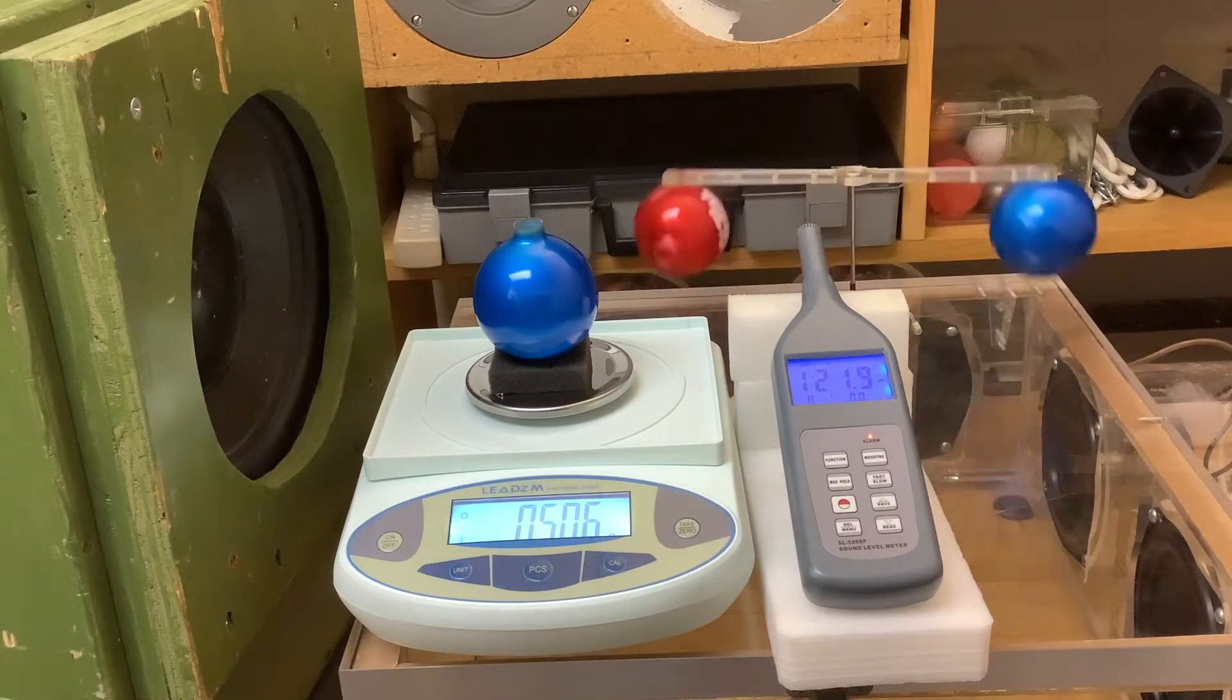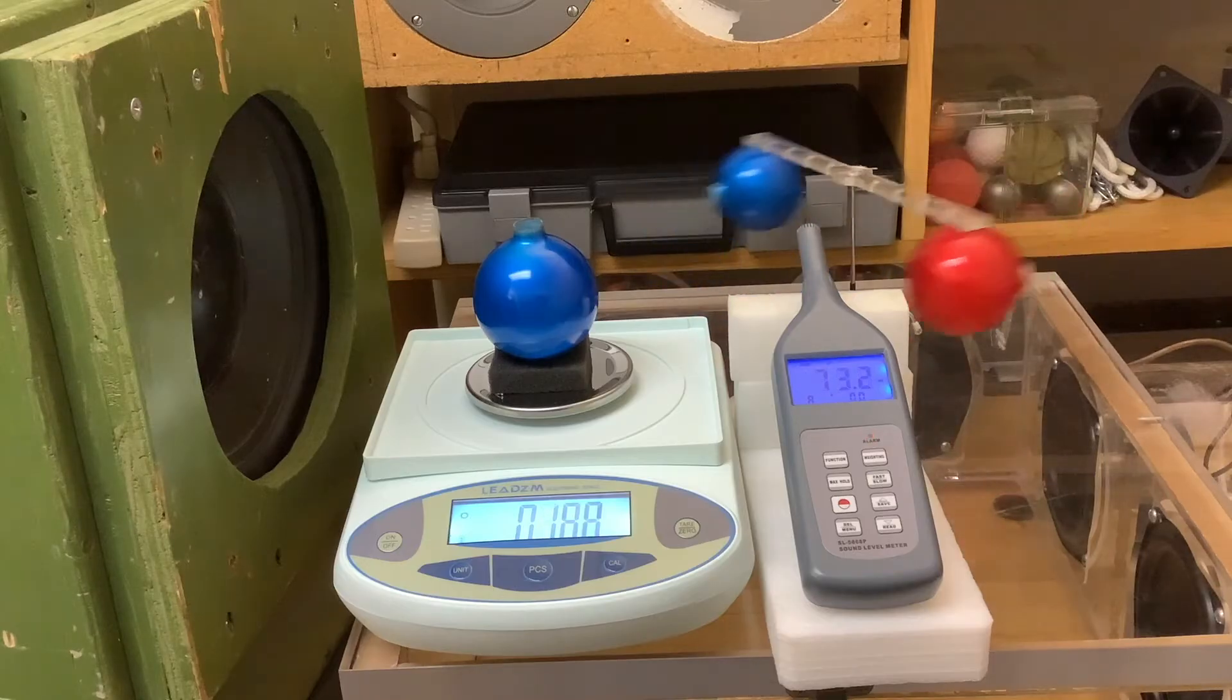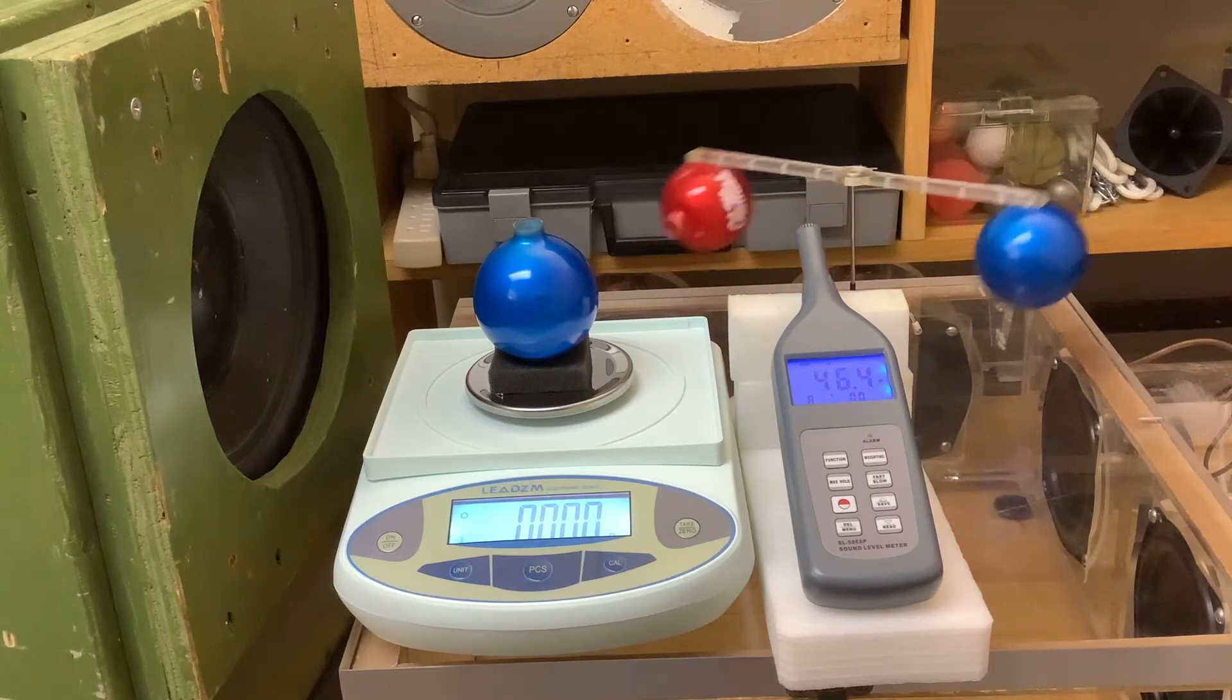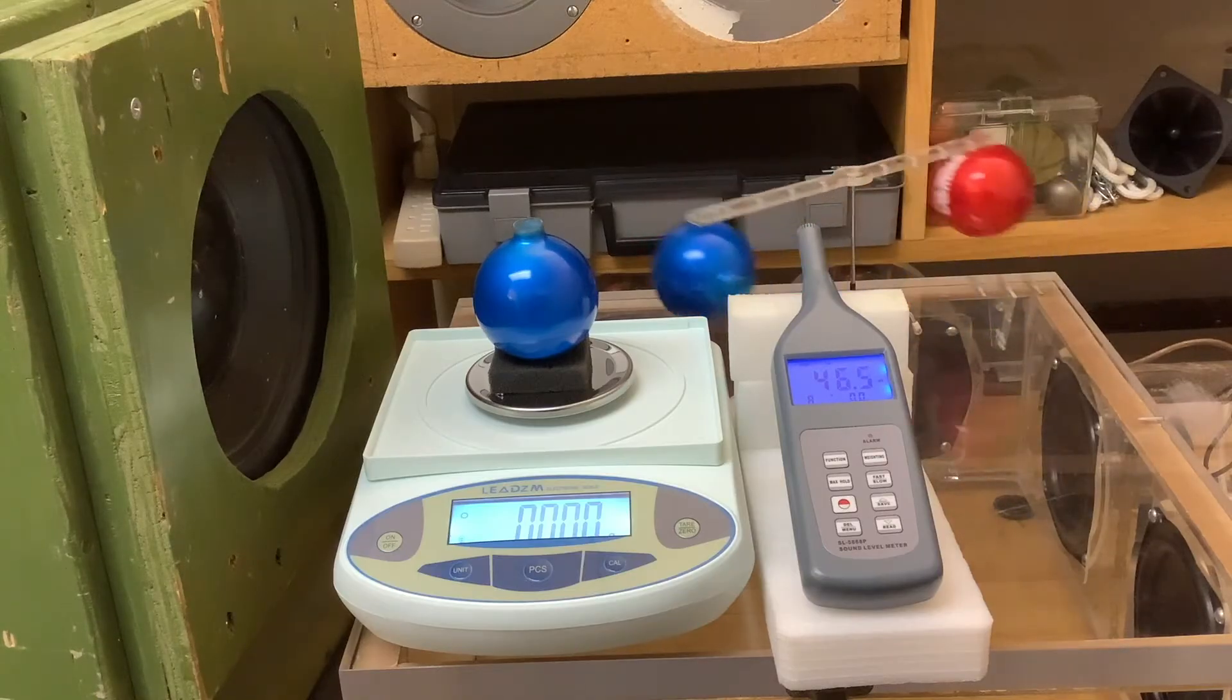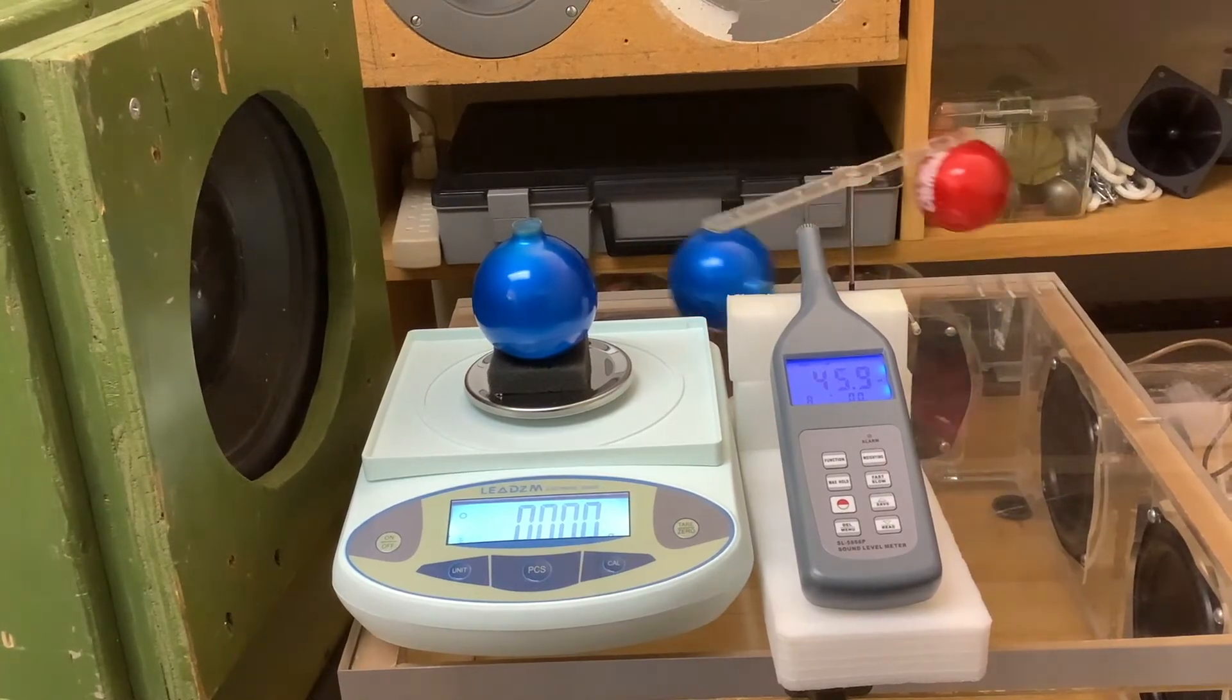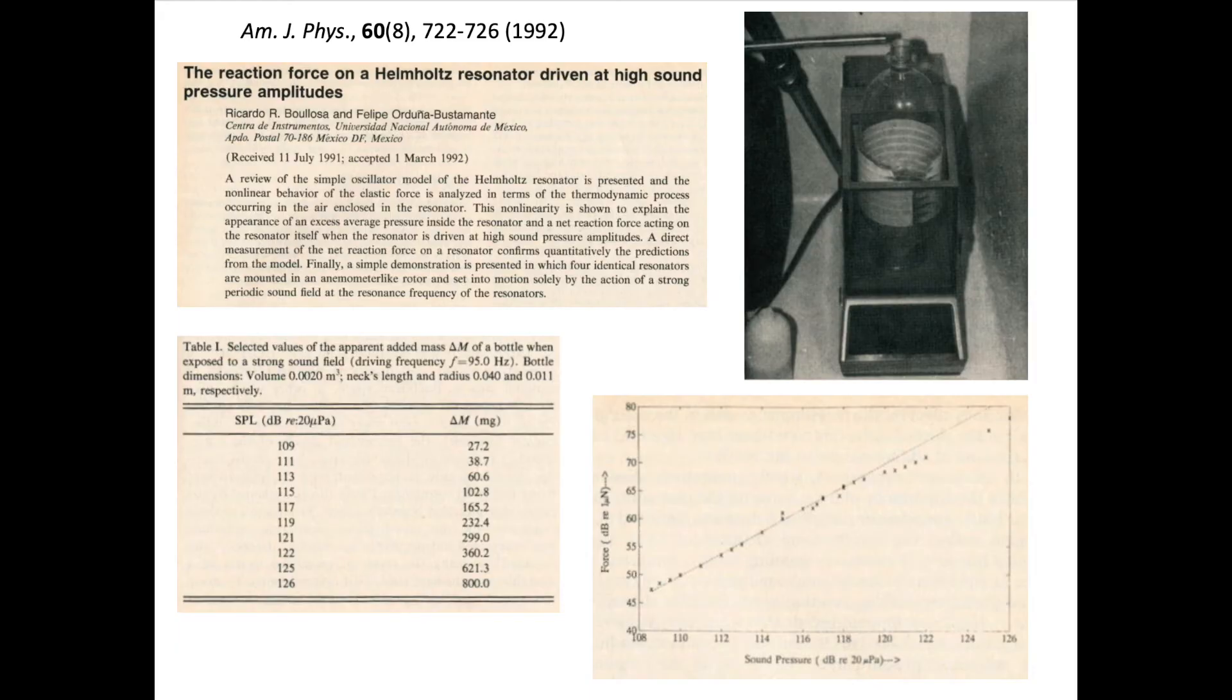Turning the sound off will cause the excess mass to drop to zero, and the pair of resonators in the background will stop rotating. I was pretty proud of myself for coming up with the idea of measuring the thrust with the pan balance, only to discover during my literature review that this exact method had been published in a really nice 1992 paper in the American Journal of Physics, along with an updated version of Rayleigh's explanation of the force.